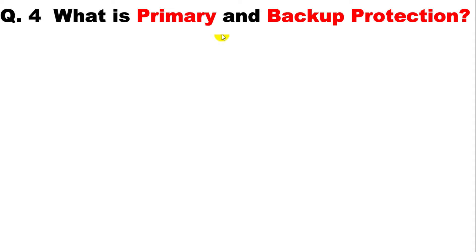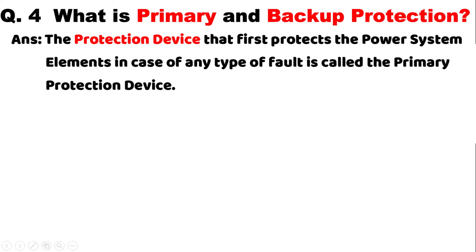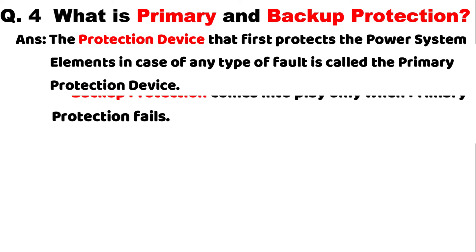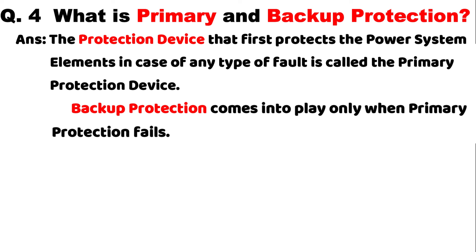The fourth question asks: what is primary protection and backup protection? When any fault occurs, the protection device that first protects the power system elements is known as primary protection. If the primary protection device is not working for some reason, then we use backup protection. Backup protection comes into play only when primary protection fails — if primary protection is unable to break the circuit, backup protection will break the circuit.